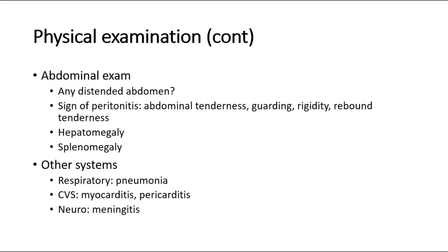On abdominal examination, look for a distended abdomen, any signs of peritonitis, and palpate for hepatomegaly or splenomegaly, which might be seen in week 2 of the disease.